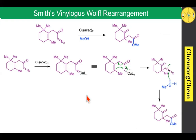Today we have seen copper acetylacetonate as a catalyst in organic synthesis, especially copper carbene-based reactions such as cyclopropanation, ylide formation and related transformations, insertion reactions, and finally the Smith-Doering-Wolf rearrangement. I hope this video has expanded your understanding about copper carbene-based reactions. If you enjoyed this video, like, share, and comment. One more important thing: instead of using copper acetylacetonate, we can also use rhodium acetate — rhodium acetate does all of these same types of reactions.